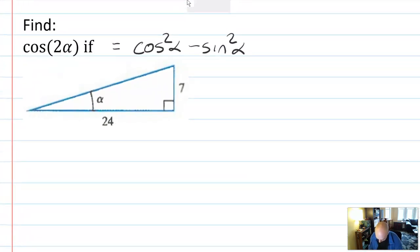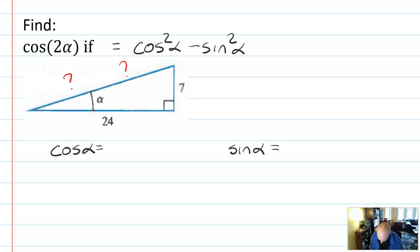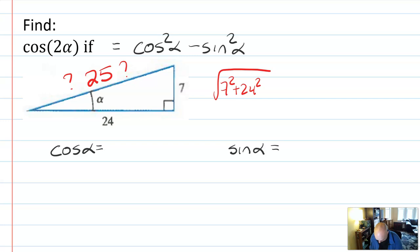So what I need to find is cosine alpha and sine alpha. To find both of those, I need to know the hypotenuse of this triangle. I use the Pythagorean theorem: the square root of seven squared plus 24 squared. I happen to know that equals 25 — you can check me if you want.